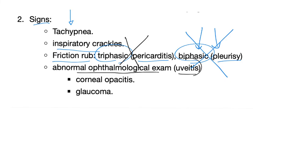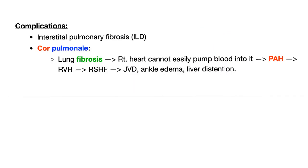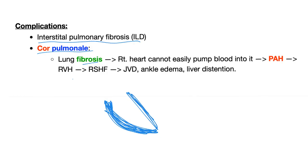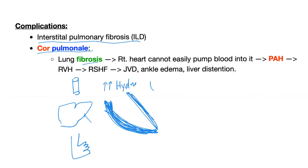An abnormal ophthalmological exam may reveal corneal opacities or glaucoma due to uveitis. Complications of sarcoidosis include interstitial pulmonary fibrosis and cor pulmonale, because the right heart cannot pump blood easily against the fibrotic lung. This leads to pulmonary artery hypertension, right ventricular hypertrophy, jugular venous distension, ankle edema, and liver distension due to increased hydrostatic pressure — a transudative edema.